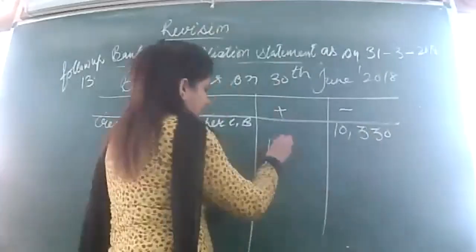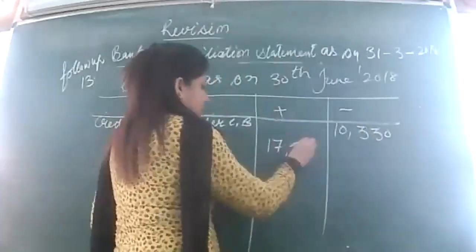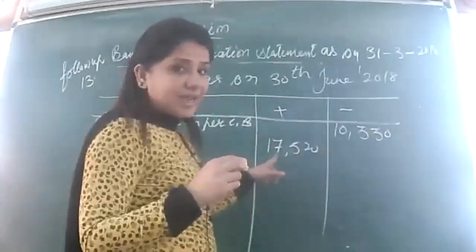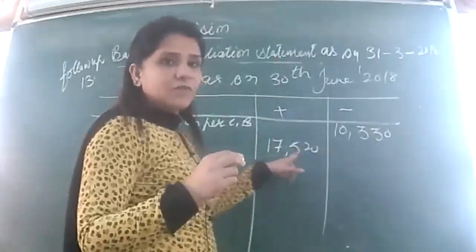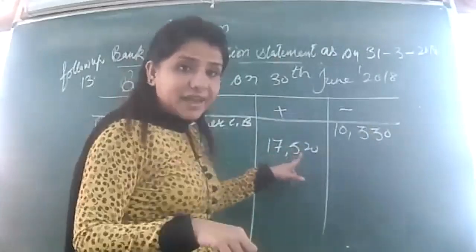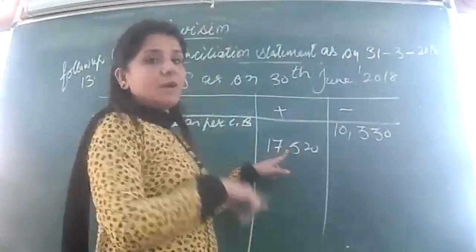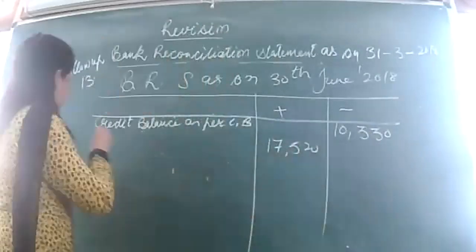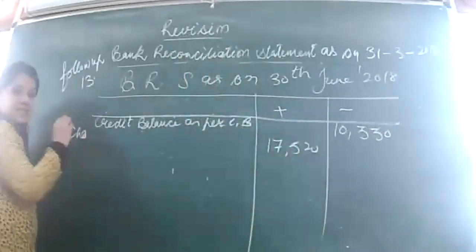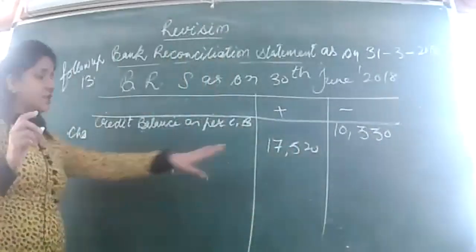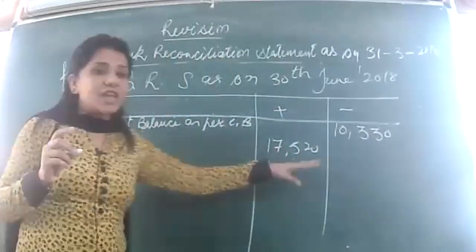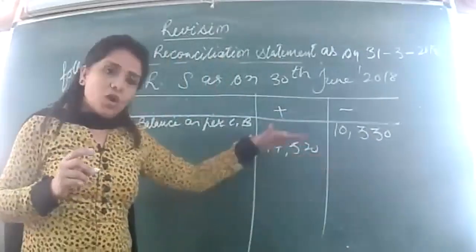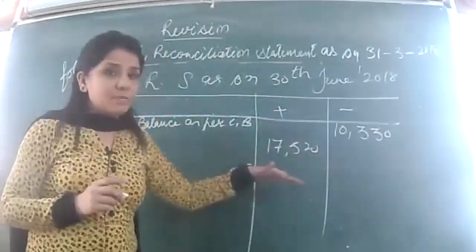Rupees 350 was deposited into bank but the bank wrongly debited the account instead of crediting it. This means the bank reduced my balance by 350. When the nature of the account is changed from credit to debit, the difference is double the amount — you may recall this from the rectification of errors chapter.